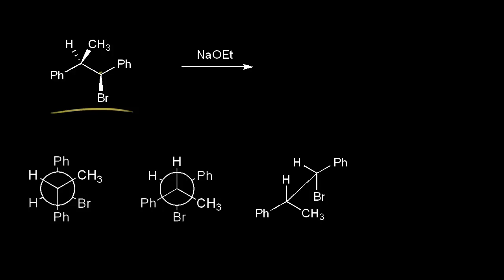The carbon bonded to the bromine is our alpha carbon. The carbon bonded to the alpha carbon is our beta carbon. In an E2 mechanism, our strong base is going to take the beta proton. So let's look down that beta-alpha bond so we can see a Newman projection.